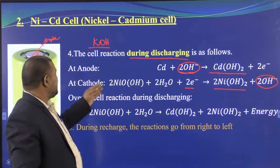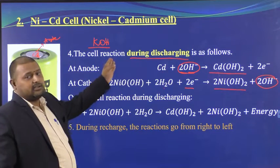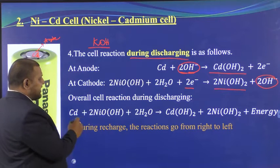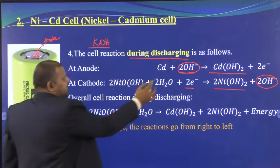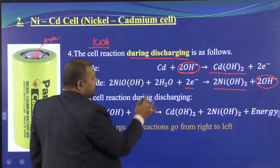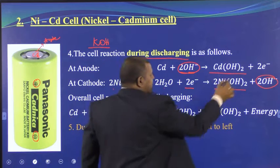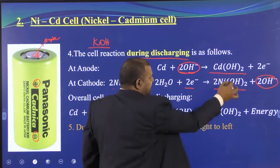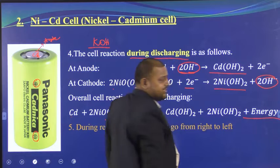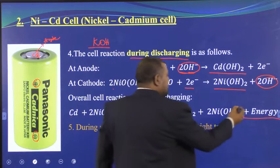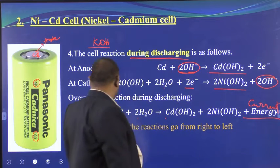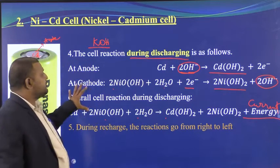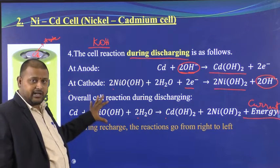The overall discharge reaction: Cd + 2NiOOH + 2OH⁻ + 2H₂O → Cd(OH)₂ + 2Ni(OH)₂ + energy. The two OH⁻ and two electrons cancel. The energy produced is current — some voltage and current — so this is what happens during discharge.